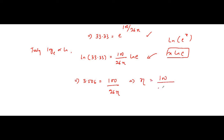Solving for the ideality factor: η = 100 / (26 × 3.506) = 1.097, which is approximately 1. Therefore the type of diode is germanium, because germanium has an ideality factor equal to 1.